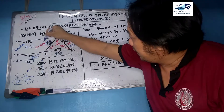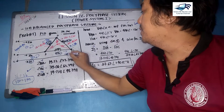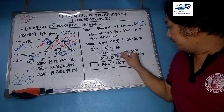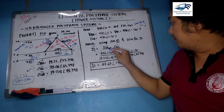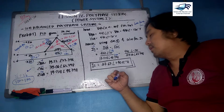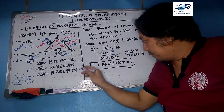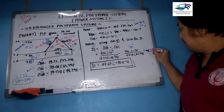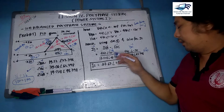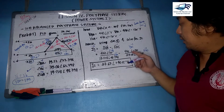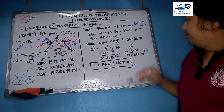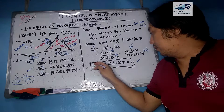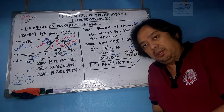ICA = VCA ÷ ZCA, IBC = VBC ÷ ZBC. The polarity marks must coincide with the same letters; otherwise you need to reverse the phase. VCA = 440∠+120° divided by ZCA, and VBC = 440∠−120° divided by ZBC. The final answer for IC is 27.67∠48.05° amperes.